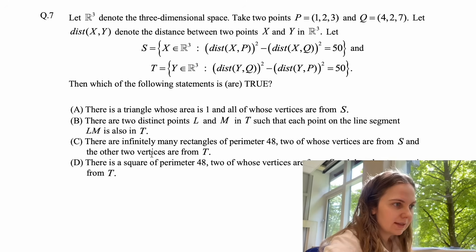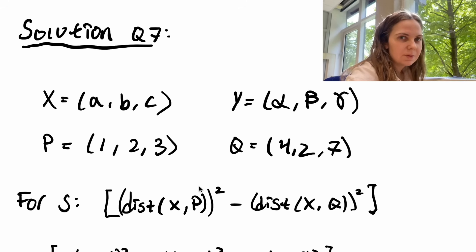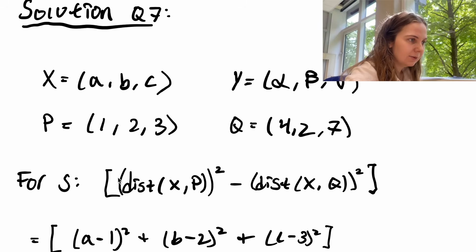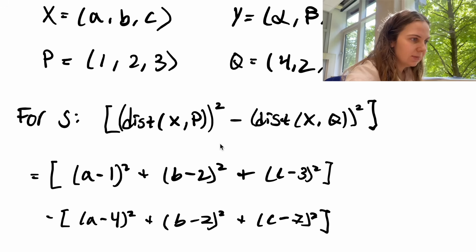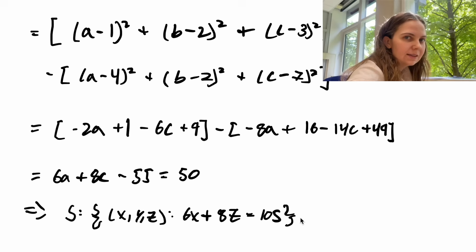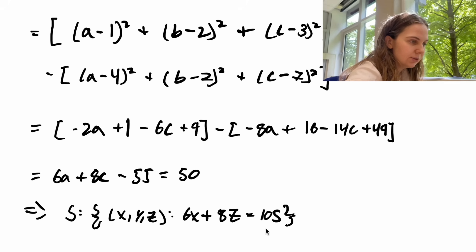So the way that you should solve this is that you should first try to work out what the equations for S and T are. So if we start with S we know that there are some points x that satisfy this relationship. So if we take some random point x in S that we can note with coordinates a, b, c, then we can easily work out the distance between x and p and the distance between x and q. So we end up with this following expression and we see that these two middle terms cancel each other. All of the squares of a and c also cancel each other and we can sum up the remaining terms and we end up with 6a plus 8c minus 55 is equal to 50. Meaning that we now have an equation for S which is 6x plus 8z is equal to 105.